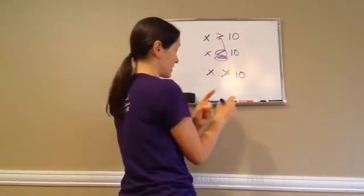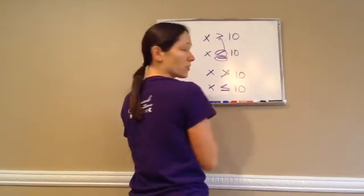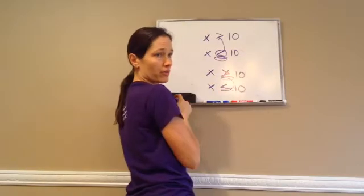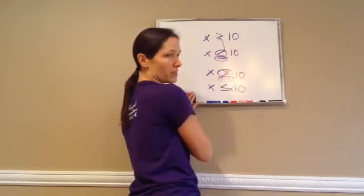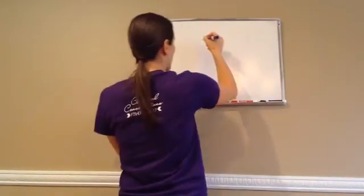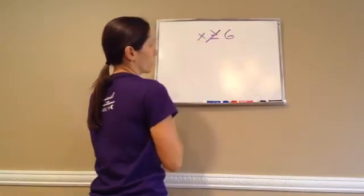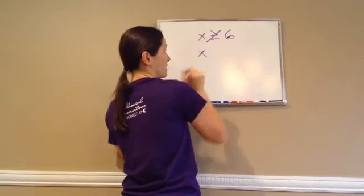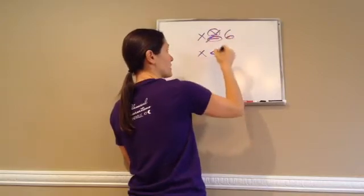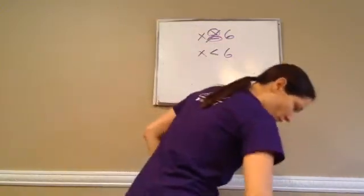So then what is X? X is less than 10, but it is also equal to 10. You have to do the opposite of the sign, and also include or exclude the equal sign as the opposite. What if X is not greater than or equal to 6? Then X is less than 6. The opposite of greater than is less than, and the opposite of equal to is not equal to.